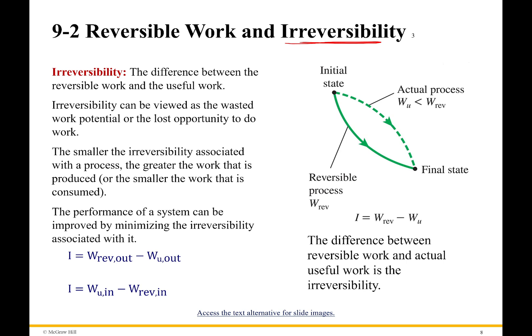Here's a nice way to look at how you calculate irreversibilities. We're always looking for a positive number. In the output case, you'll have more reversible work output, so that term comes first. In the input case, you have less reversible work input, so the terms switch places. If you get a negative sign, just switch it — irreversibility is always a positive number. With that, we're going to stop here. Next time I'll actually do a problem, a simple problem, going through how irreversibilities work. Thanks for listening — I'll see you all then. Bye-bye.